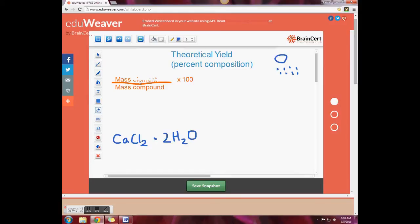Except instead of mass of the element, we're interested in mass of the water. And instead of the compound, we're talking about the hydrate as a whole. So our new formula is mass of the water divided by mass of the hydrate times 100.